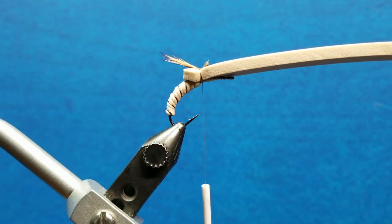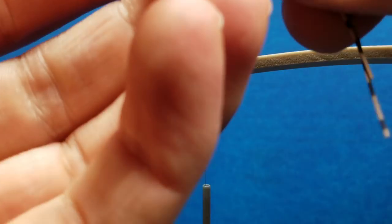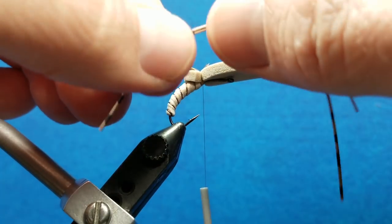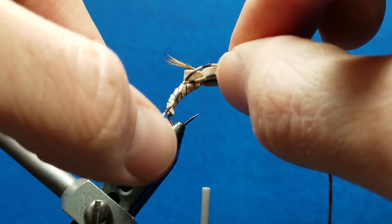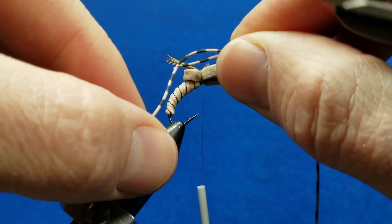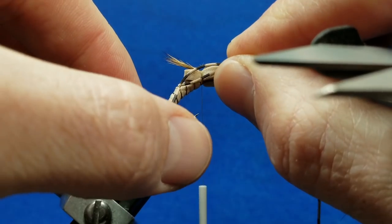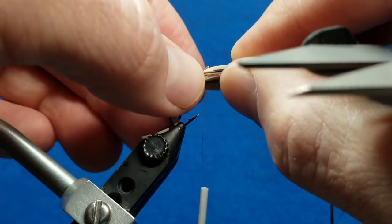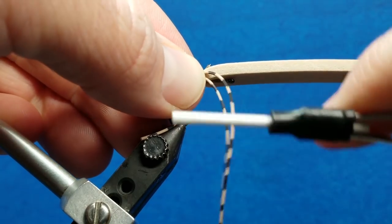I'm bringing the rubber legs here too. I've pre-knotted these. So I'm using tan barred legs on this one. And I'm going to tie them in right on the side, on each side. And I want that joint, this joint in there, to extend just a little bit past my foam tag. So I'm going to hold that in there and catch it with a couple wraps.